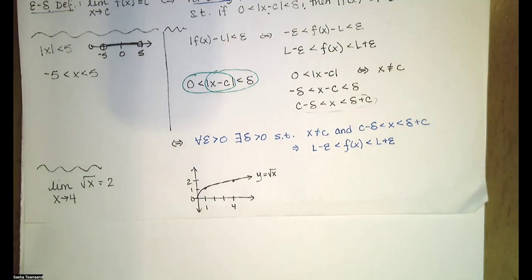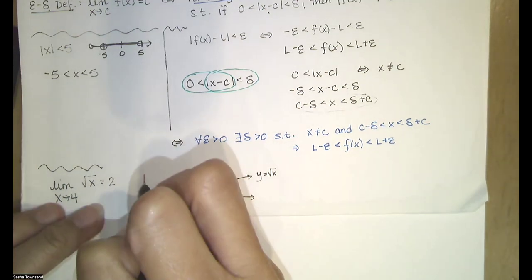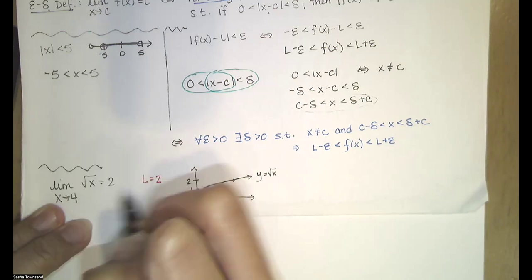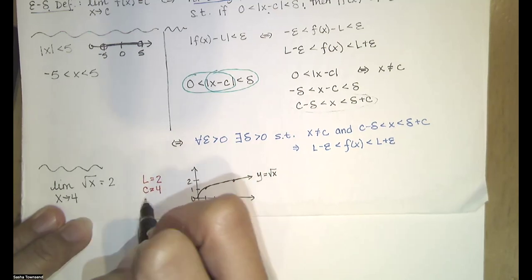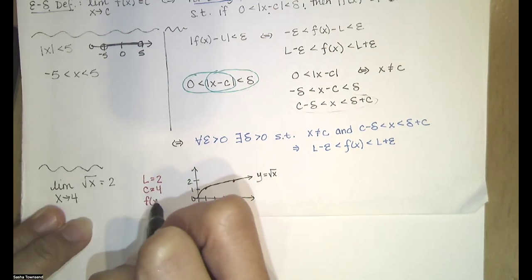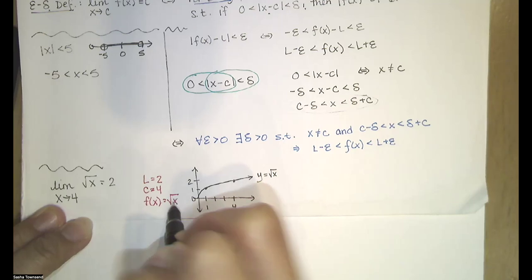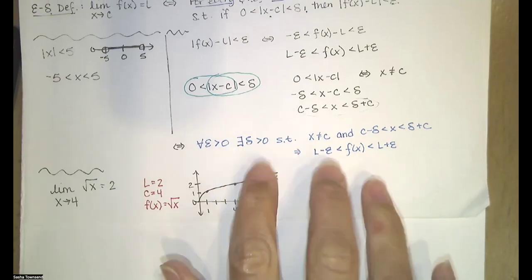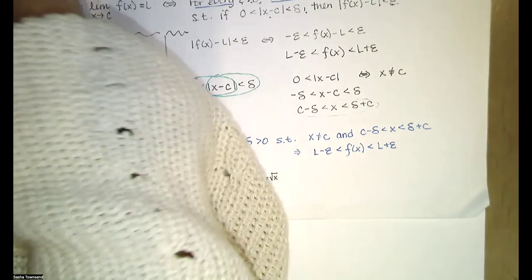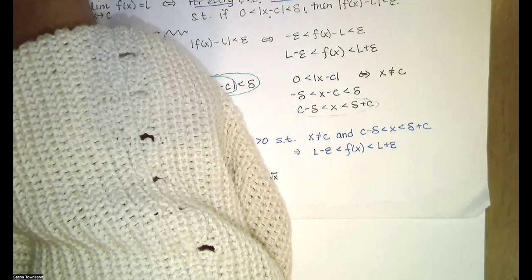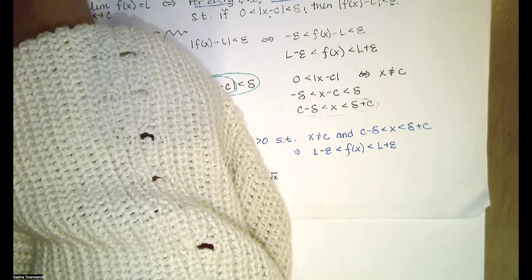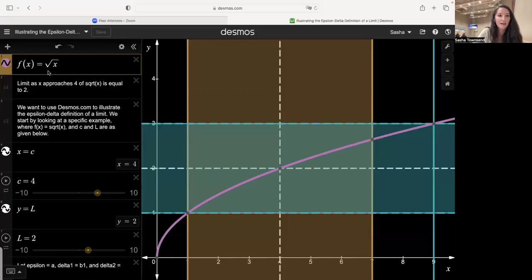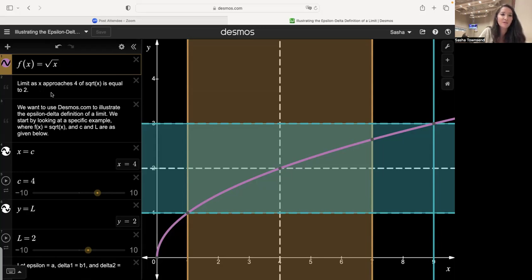In this case, L equals two, c equals four, and our function is the square root of x. We're going to explore this epsilon-delta definition using an online graphing calculator. The function f(x) is the square root of x, and we want to show that the limit as x approaches four of the square root of x equals two.